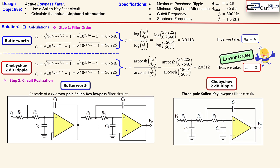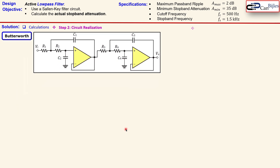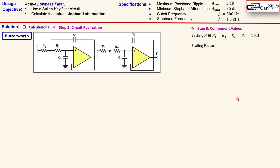Let's calculate the actual component values for the Butterworth circuit — R1 through R4 and C1 through C4. We set all resistors equal to a convenient value of 1 kΩ. The scaling factor C is defined as 1 divided by the resistor times the cutoff angular frequency omega_c, where omega_c equals 2π times the cutoff frequency f.